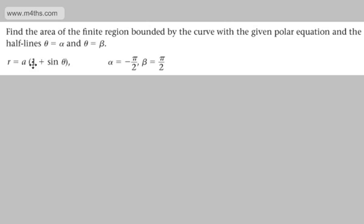So we've got r equals a multiplied by 1 plus sine theta, alpha is negative pi by 2, beta is pi by 2.